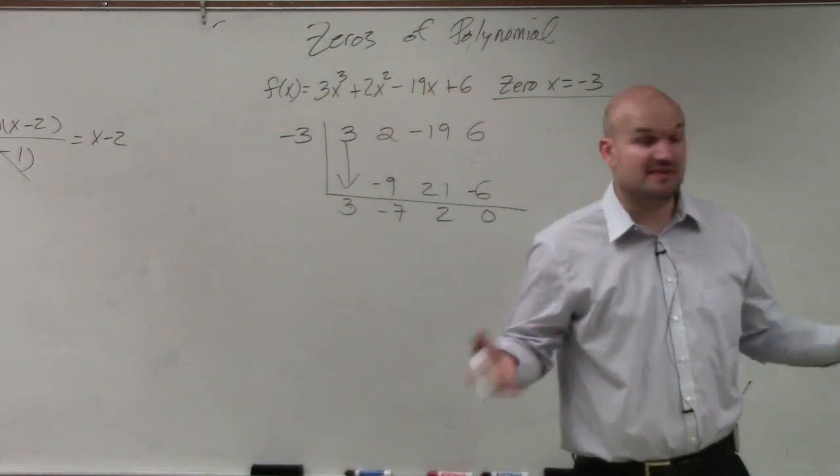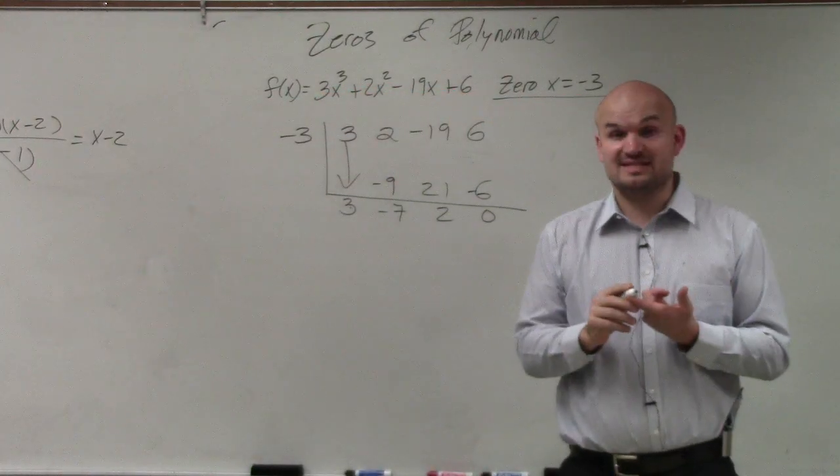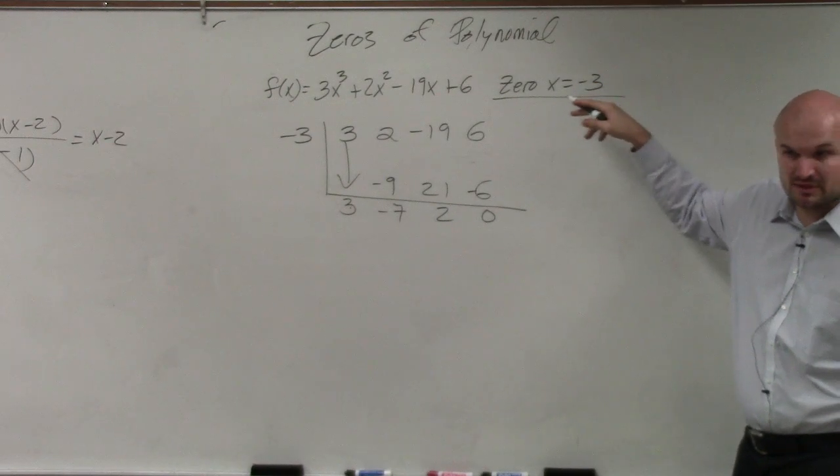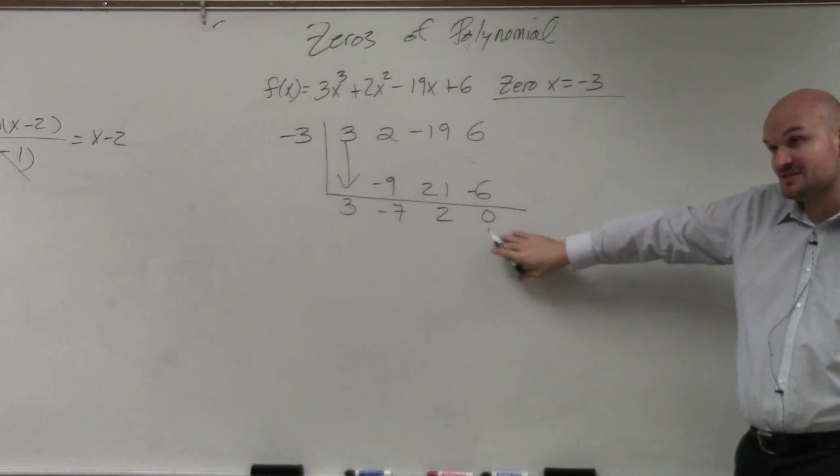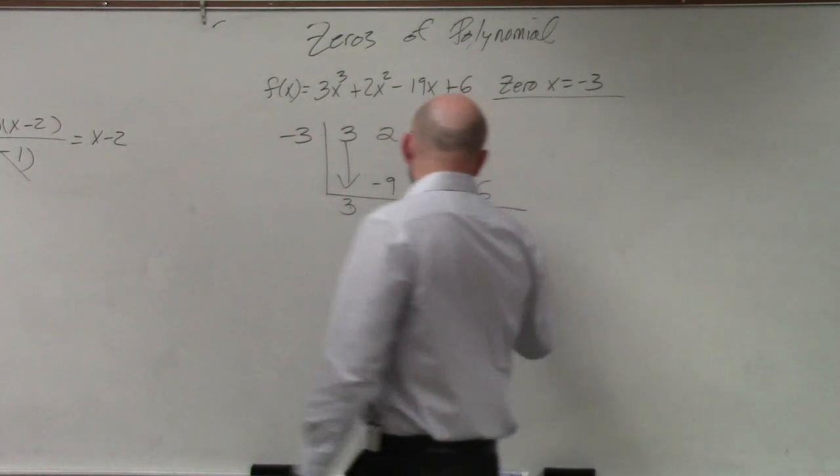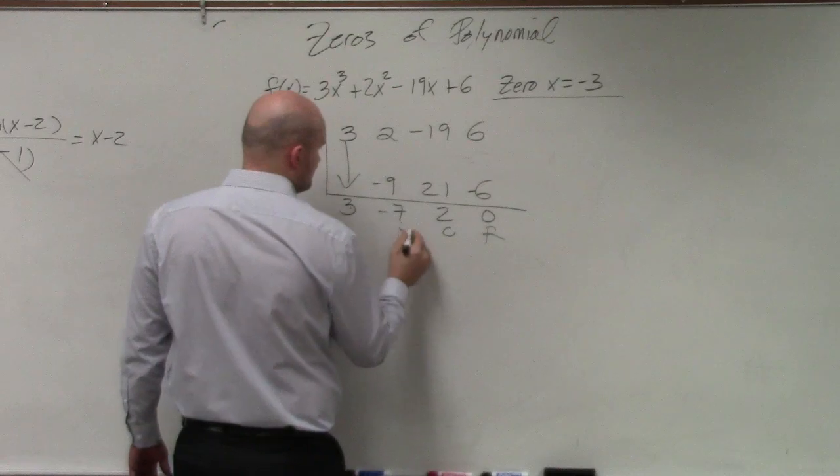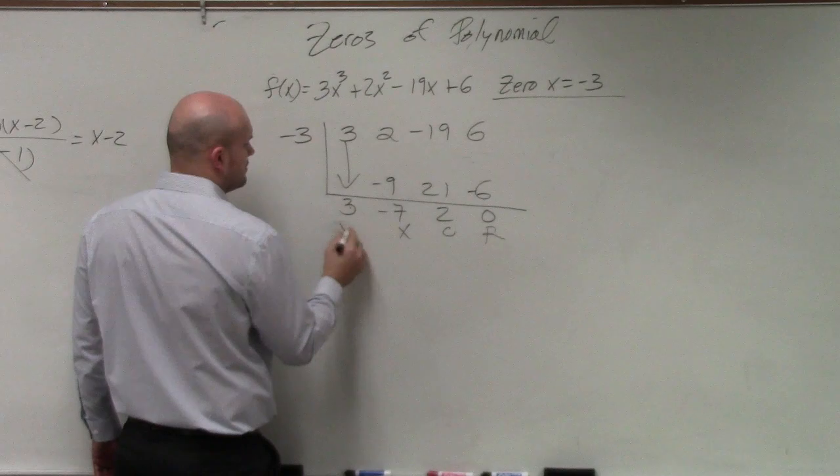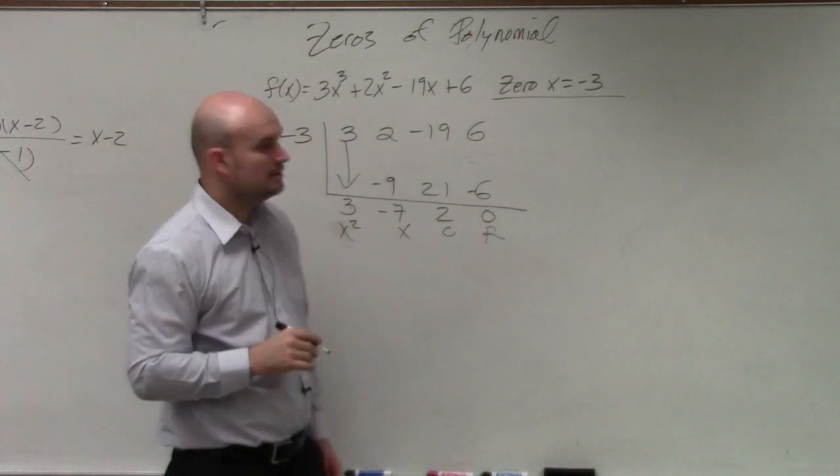We know it has to, right? If it doesn't evenly divide, we know that we did something wrong because the problem says that's a zero. So we know it has to evenly divide. Now, this is our other factor. This is how many times this divides into that. So we have to write out what that is.